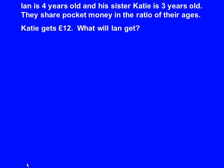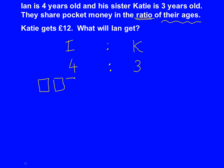One more type of question: Ian is 4 years old and his sister Katie is 3 years old. They share pocket money in the ratio of their ages. Katie gets 12 pounds — what will Ian get? We know it's a ratio question because it has the word ratio in it, so same method. We've got I for Ian and K for Katie. The ratio is their ages, so Ian is 4 and Katie is 3. Now we draw the boxes: 4 boxes for Ian and 3 boxes for Katie.